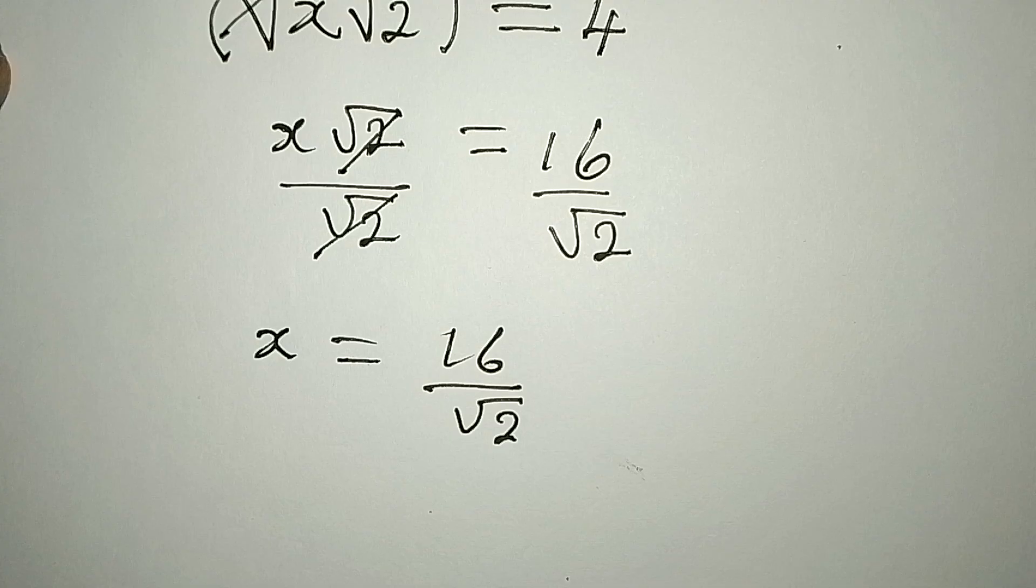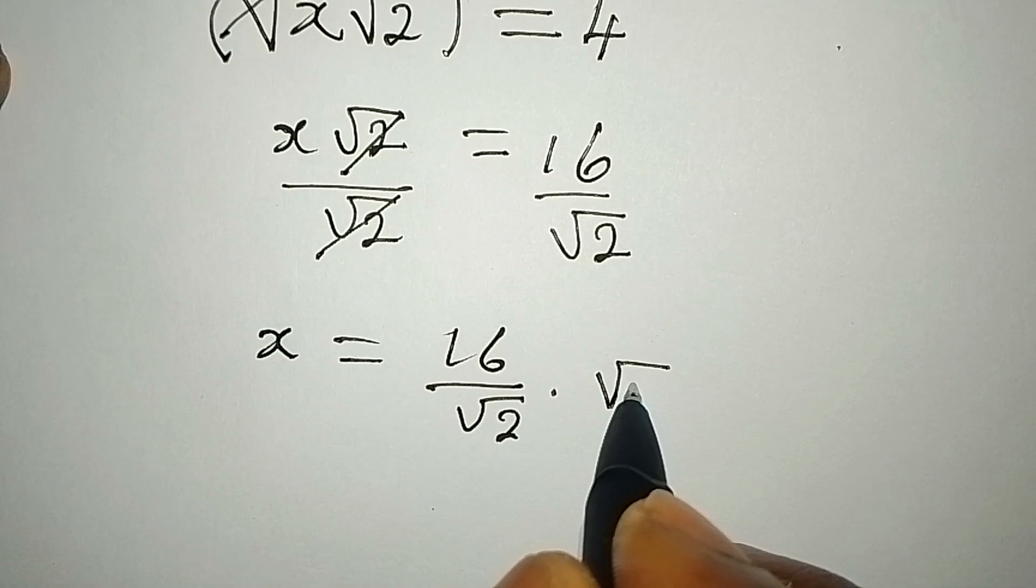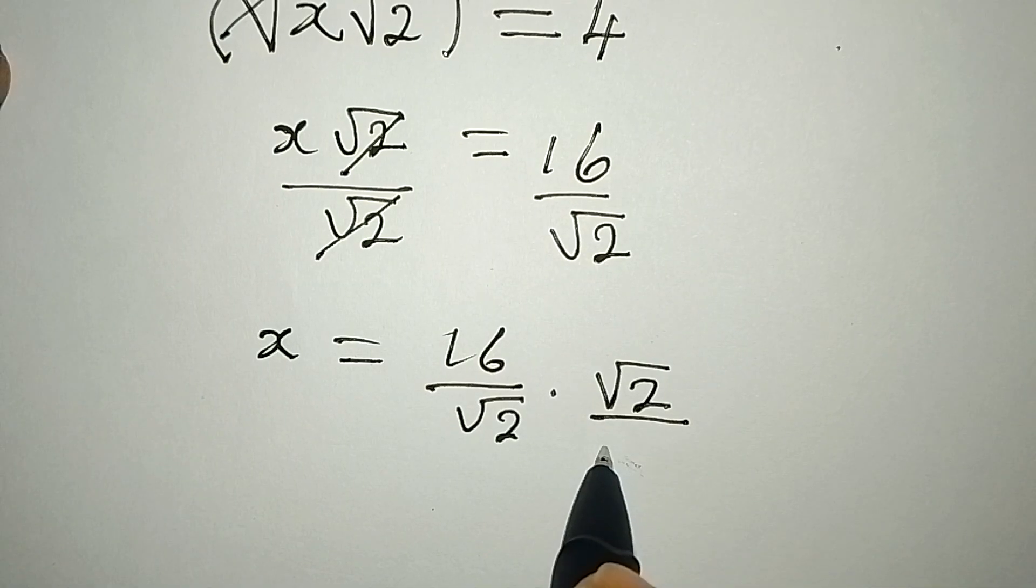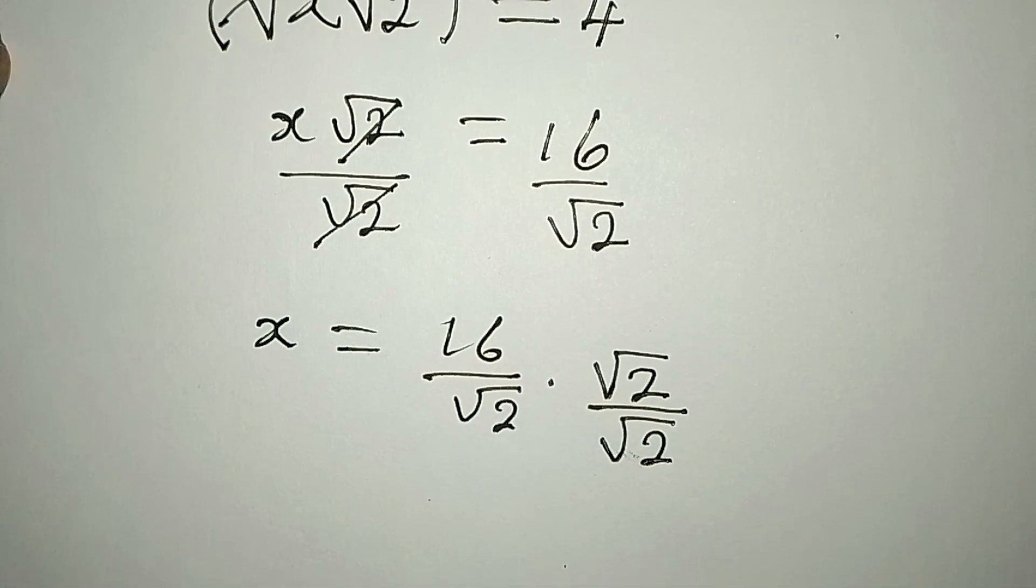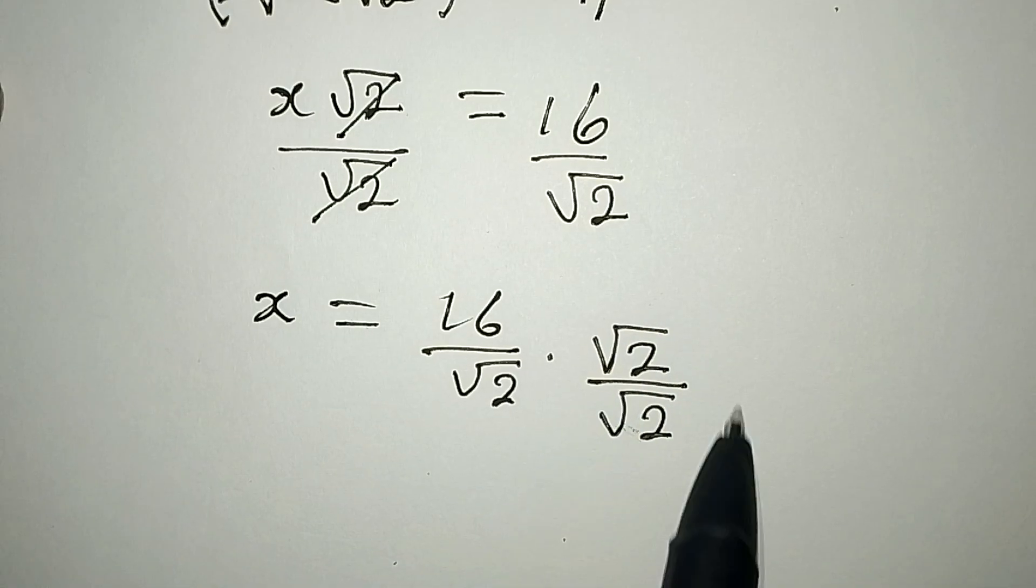And at this point, because we have root 2 under, we have to rationalize, and we do that by multiplying this by root 2 and the denominator by root 2. Remember, root 2 over root 2 will give us 1, so if you multiply the whole of this by this you're not changing anything.